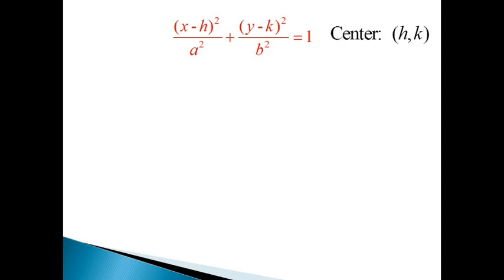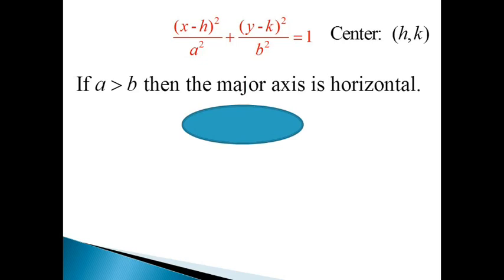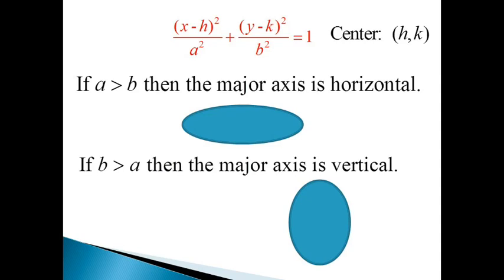The center is (h, k) — just like in a circle, you pull it straight off the equation. If a is greater than b, then the major axis is horizontal; a is under the x value and the x-axis is horizontal, so that's how you can remember it. If b is greater than a, the major axis is vertical, because b is under the y value and the y-axis is vertical.